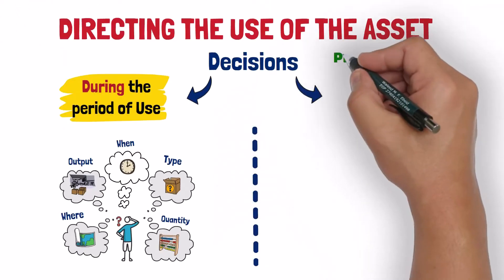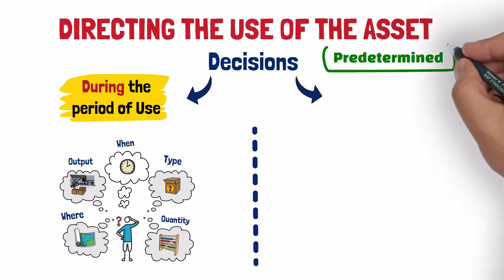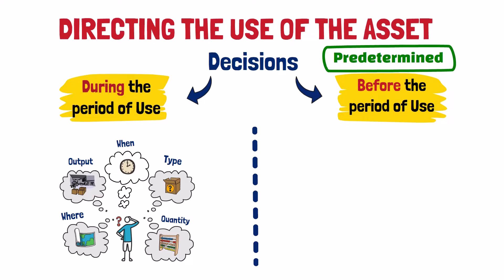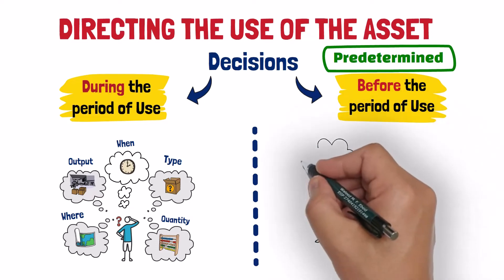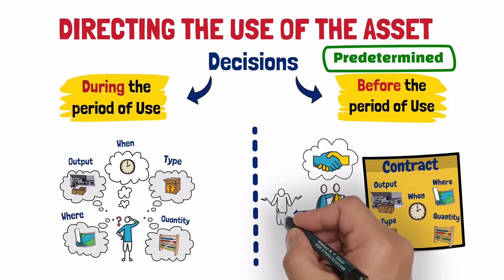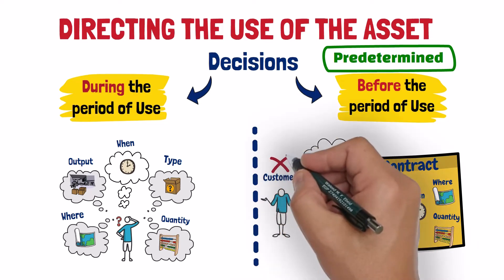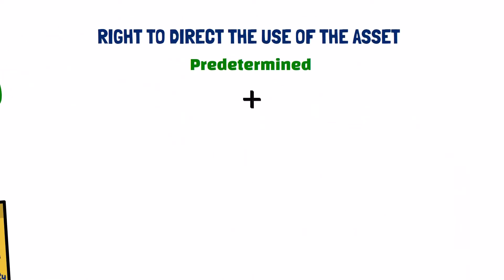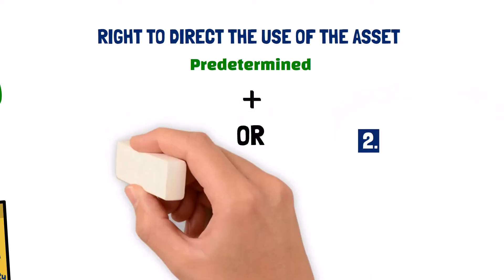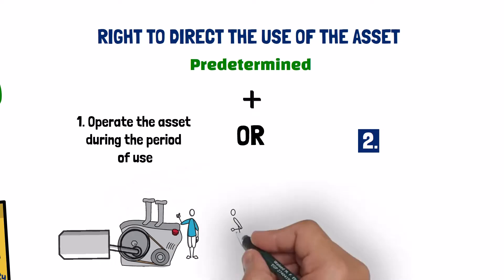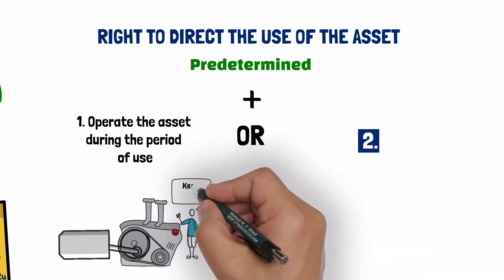Sometimes, the decisions about directing the use of the asset are predetermined before the period of use starts. This is the case when both the supplier and the customer agree about them in the contract. Here, the customer does not have the right to direct the use of the asset during the period of use, unless one of the following two conditions is satisfied: the customer has the right to operate the asset throughout the period of use, where the supplier cannot interfere with the customer's operating procedures.